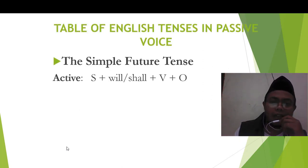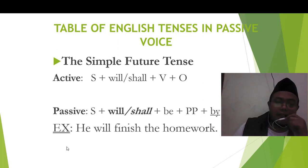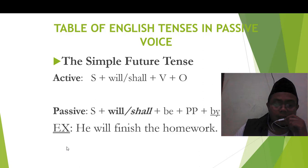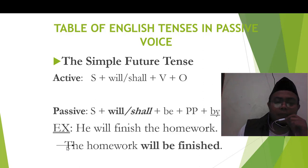Simple future tense. Subject plus will or shall plus verb 1 plus object — that is the active form. It becomes subject plus will or shall plus be plus past participle. He will finish the homework. It becomes: The homework will be finished.